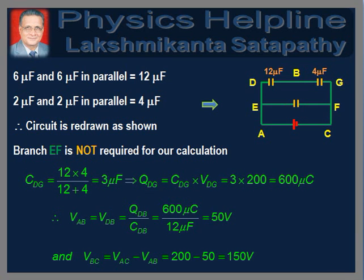The two 6 microfarad capacitors in parallel produce a capacitance of 12 microfarads. Similarly, the two 2 microfarad capacitors in parallel produce a capacitance of 4 microfarads. Hence the circuit is redrawn as shown in the figure. The branch EF is not necessary to solve the problem. Considering the loop A-B-C-A, 12 microfarads and 4 microfarads in series produce a capacitance of 3 microfarads. Therefore, charge drawn from the source is equal to 3 microfarads × 200 volts = 600 microcoulombs.